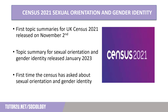The findings of census 2021 are being released in regular topic summaries, starting with the first topic summaries which released in November 2022. In January of 2023 the Office for National Statistics released the data on sexual orientation and gender identity from the census conducted in 2021.